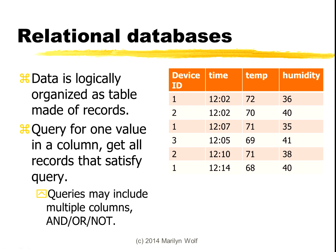Here is a simple table. Each line in the table is a record, and we have different fields or columns in the table. When we do a search, we can ask the database which records in this table have, for instance, the device ID field equal to 1. The database will then search the entire table and give us every record whose ID is equal to 1 — that would be this line, this line, and this line. That gives us all the data in each of those records, and we can look at the time, the temperature, and the humidity.